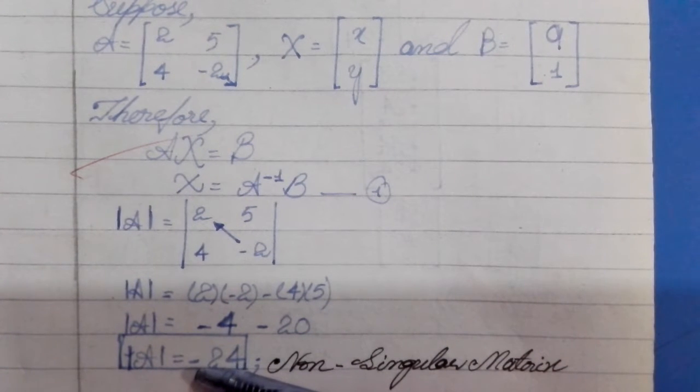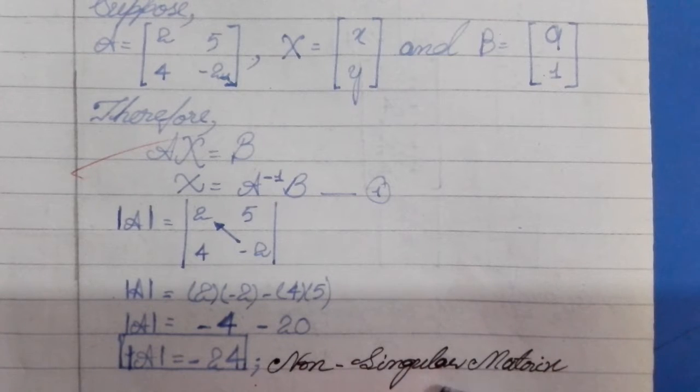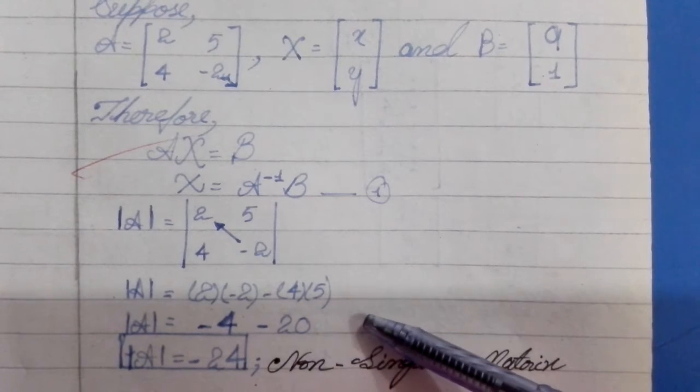As the value is minus 24, it will be a non-singular matrix.